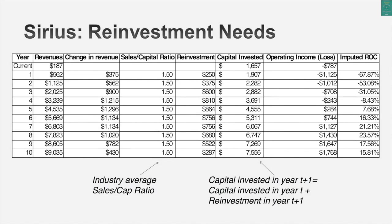Every year I take the change in revenues and look at how much I need to reinvest using that sales-to-capital ratio. I don't break it down — I don't know whether that reinvestment will be net capex, acquisitions, or R&D — with young growth companies it's tough to gauge. That reinvestment gets subtracted from my after-tax operating income to get free cash flow to the firm. Those three inputs — revenue growth, margins, and reinvestment — drive this valuation. There's a danger though: if you're not careful you might create an unsustainable company.